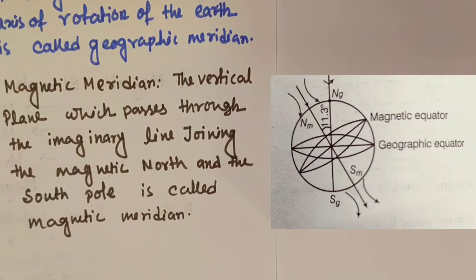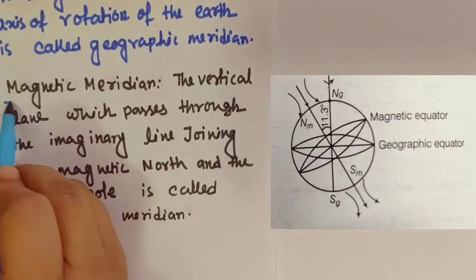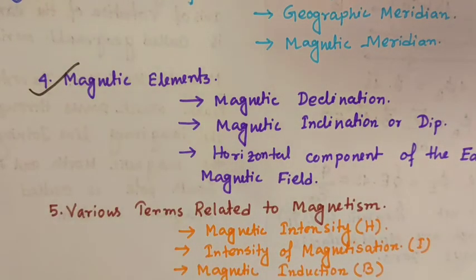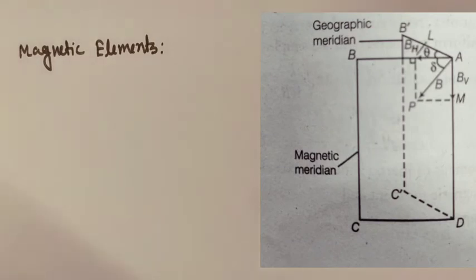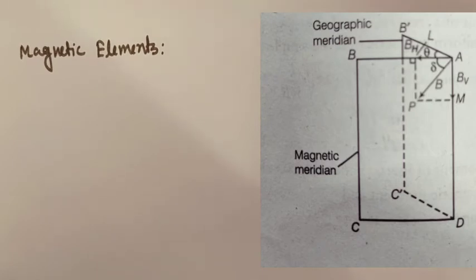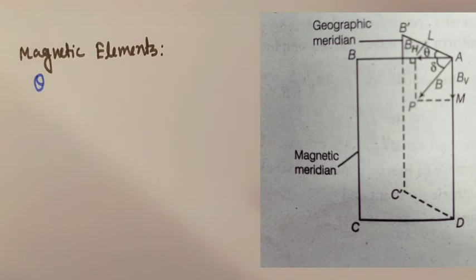Next are the magnetic elements: magnetic declination, magnetic inclination, and the horizontal component of earth's magnetic field. The physical quantities which determine the intensity of the earth's total magnetic field completely — both in magnitude and direction — are called magnetic elements. There are three magnetic elements. Magnetic declination at a place is the angle between the geographic meridian and the magnetic meridian, denoted by theta.